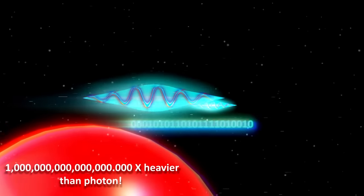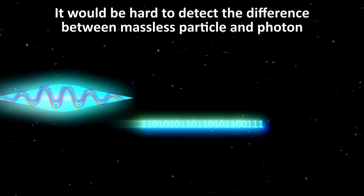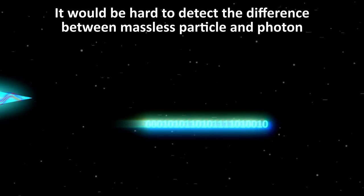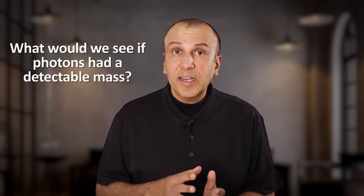So you'd be hard pressed to experimentally detect the difference between a truly massless particle and a photon with such a tiny mass. But what would we notice if photons did have a mass that we could detect? In other words, what would happen if they had a significant mass?